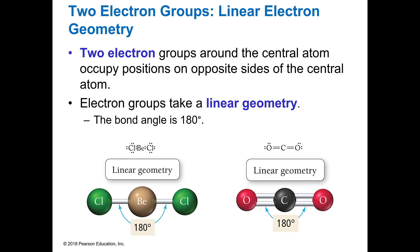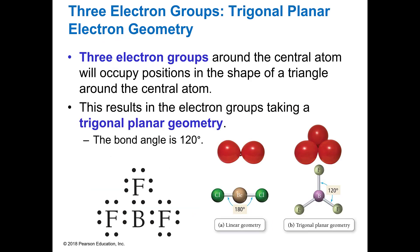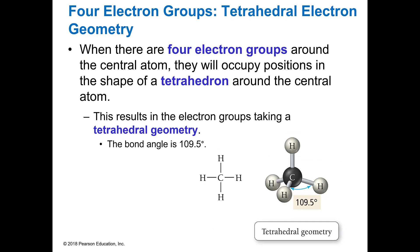And so I've got individual slides for these. But at the end, I'm going to show you kind of a summary slide that I've got in that Lab 5 material for you to look at. So if you have two electrons, then you're going to have a linear geometry, and your bond angles are going to be 180 degrees. If you have three electron groups, you're going to have trigonal planar geometry. If you have four electron groups, you're going to have tetrahedral geometry.